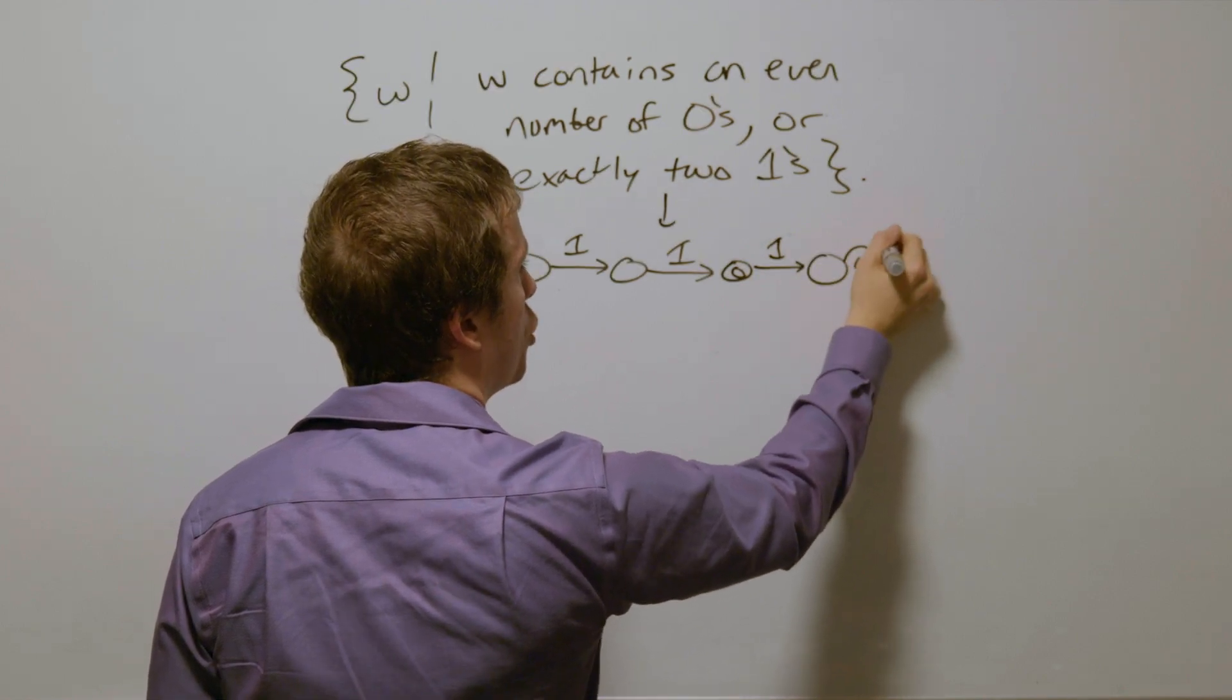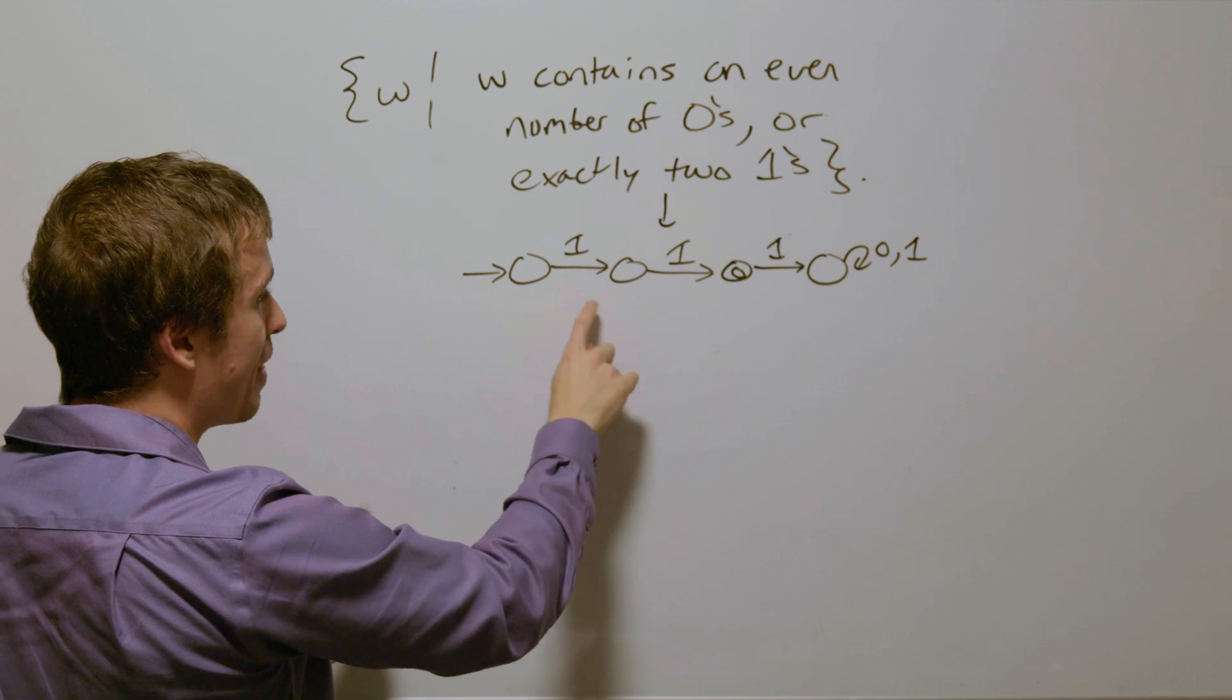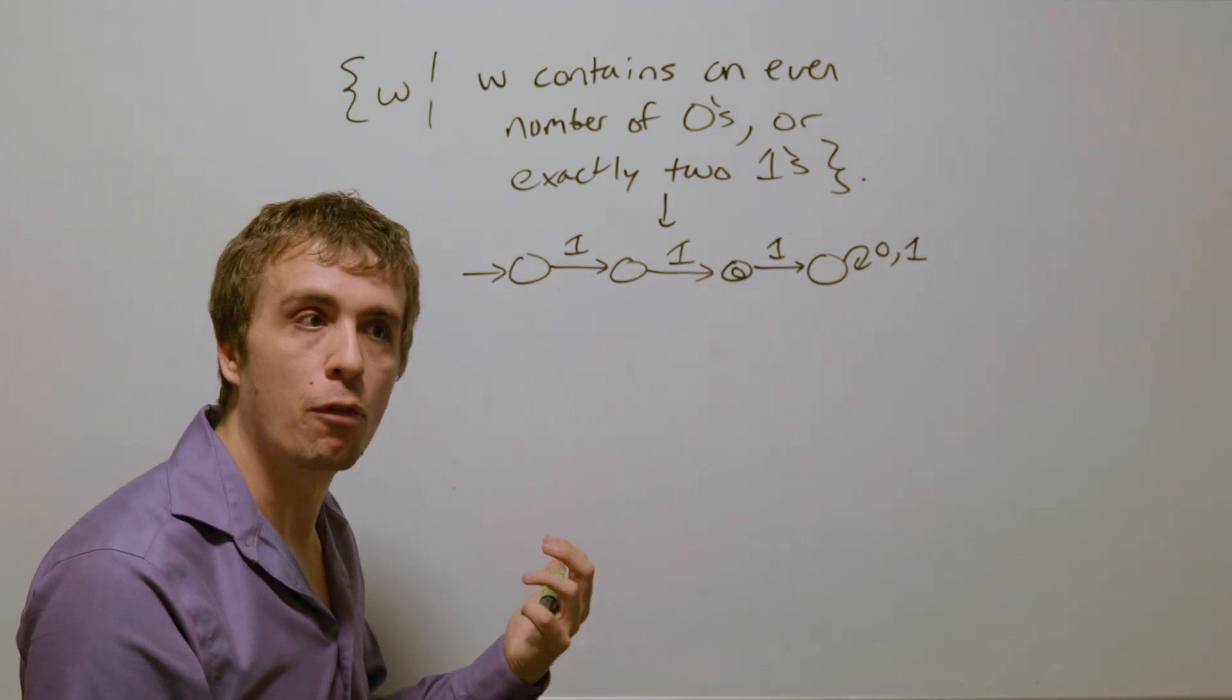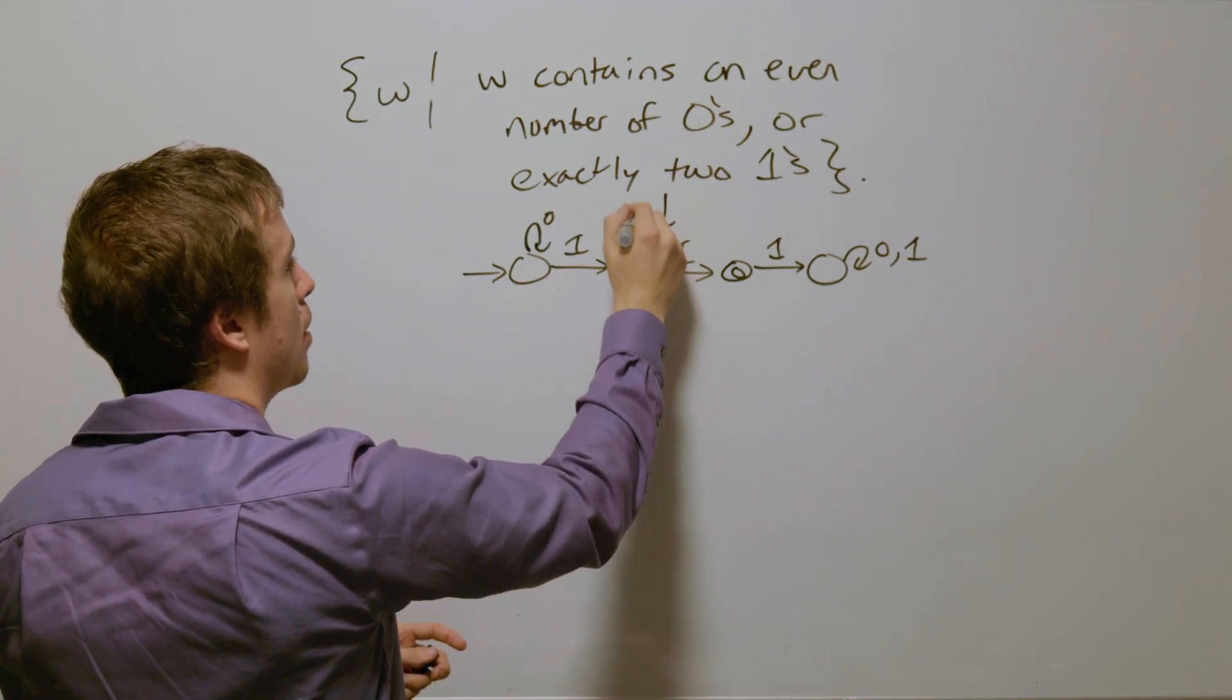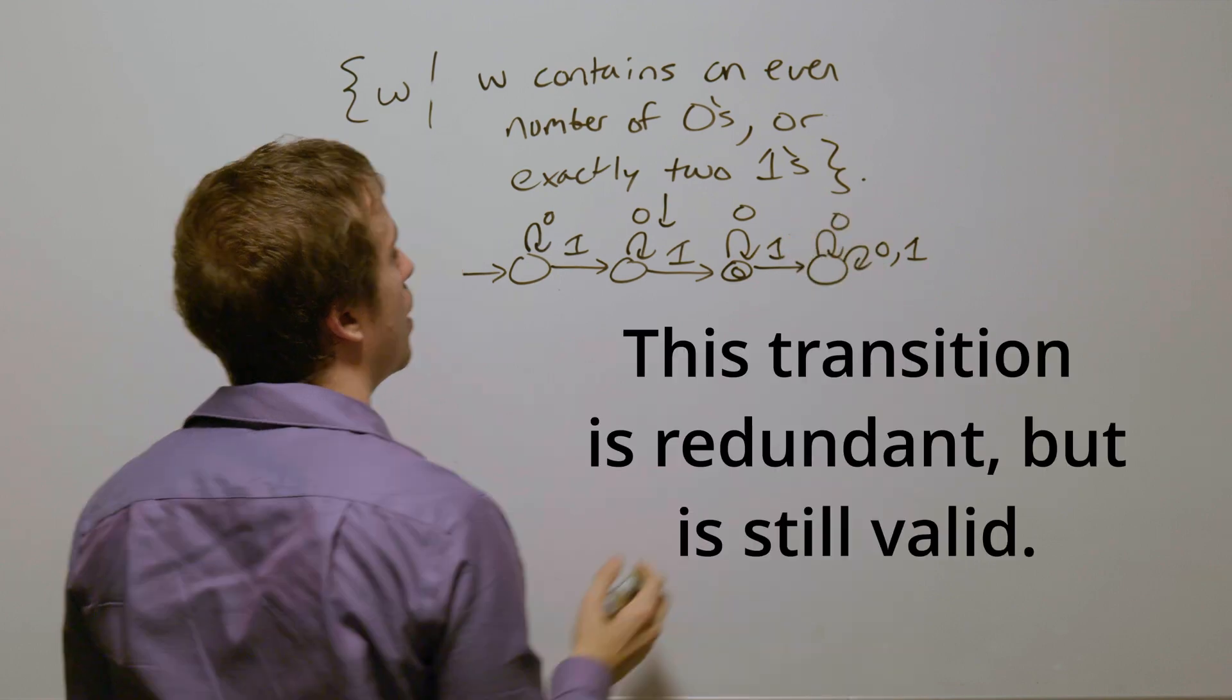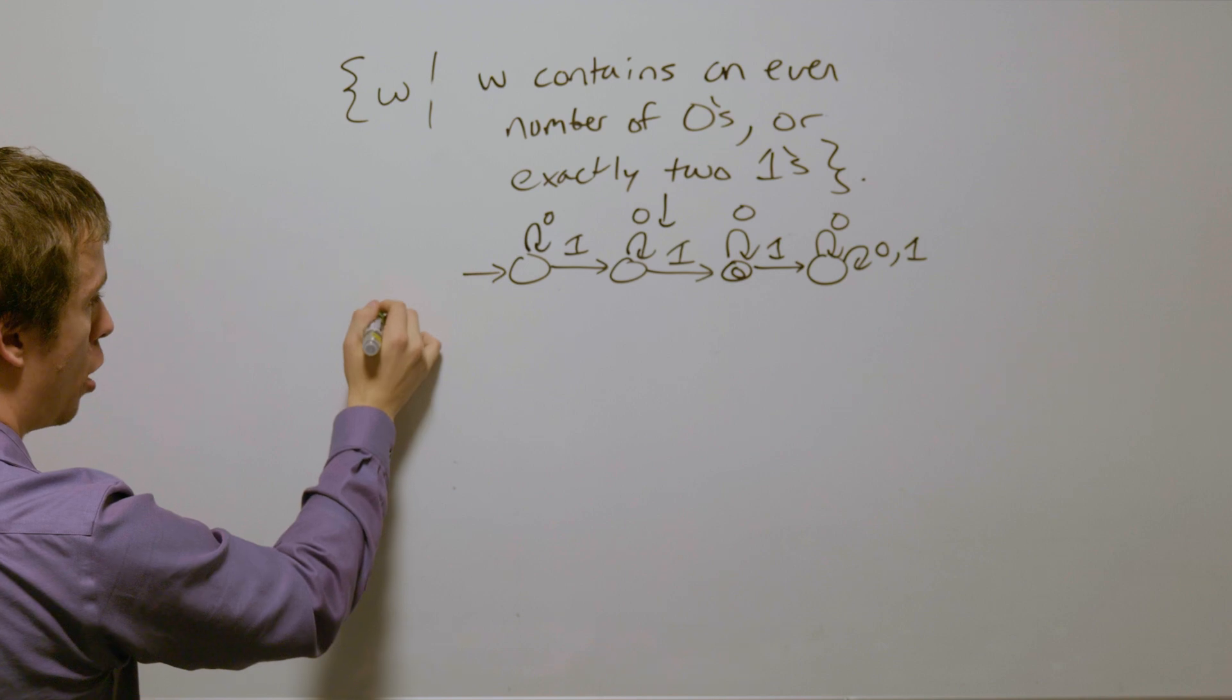and so I'm going to go to a dead state right here, and if we read anything else, if we read a zero in any of these, that doesn't change the number of ones, and so we're going to stay in the same state no matter what. So all of these stay in the same state,